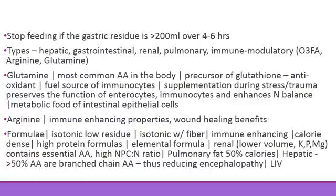Renal failure formulae are lower in volume, with reduced potassium, phosphorus, and magnesium, and contain essential amino acids with a high non-protein calorie to nitrogen ratio. Pulmonary failure formulae derive 50% of calories from fats, because fats have a lower respiratory quotient than carbohydrates — burning carbohydrates produces more CO2, whereas fats produce less CO2, reducing the CO2 load that needs to be eliminated by a compromised pulmonary system.